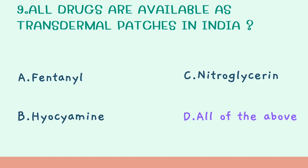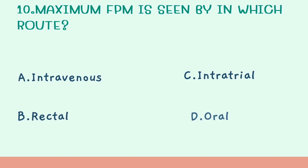Tenth question: maximum first-pass metabolism is seen by which route? Option A: Intravenous. Option B: Rectal. Option C: Intraarterial. Option D: Oral. The oral route has the maximum first-pass metabolism. Other routes such as intravenous and intraarterial bypass first-pass metabolism entirely. The oral route undergoes the most first-pass metabolism compared to all other routes.